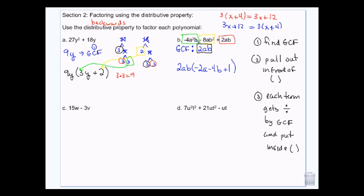Frank, Mary, and Joey will all divide by 2. When I take the 2, the 1 A, and the 1 B away — because that's what they had in common — Frank had 2 A's and I took 1, so he's left with 1 A. He had 1 B but I took it away, so the B is gone. Mary had 1 A but I took it, so it's gone. But she had 2 B's and I took 1, so she has 1 left. Joey only had 1 A and 1 B, and I took them both, so he's got nothing left.